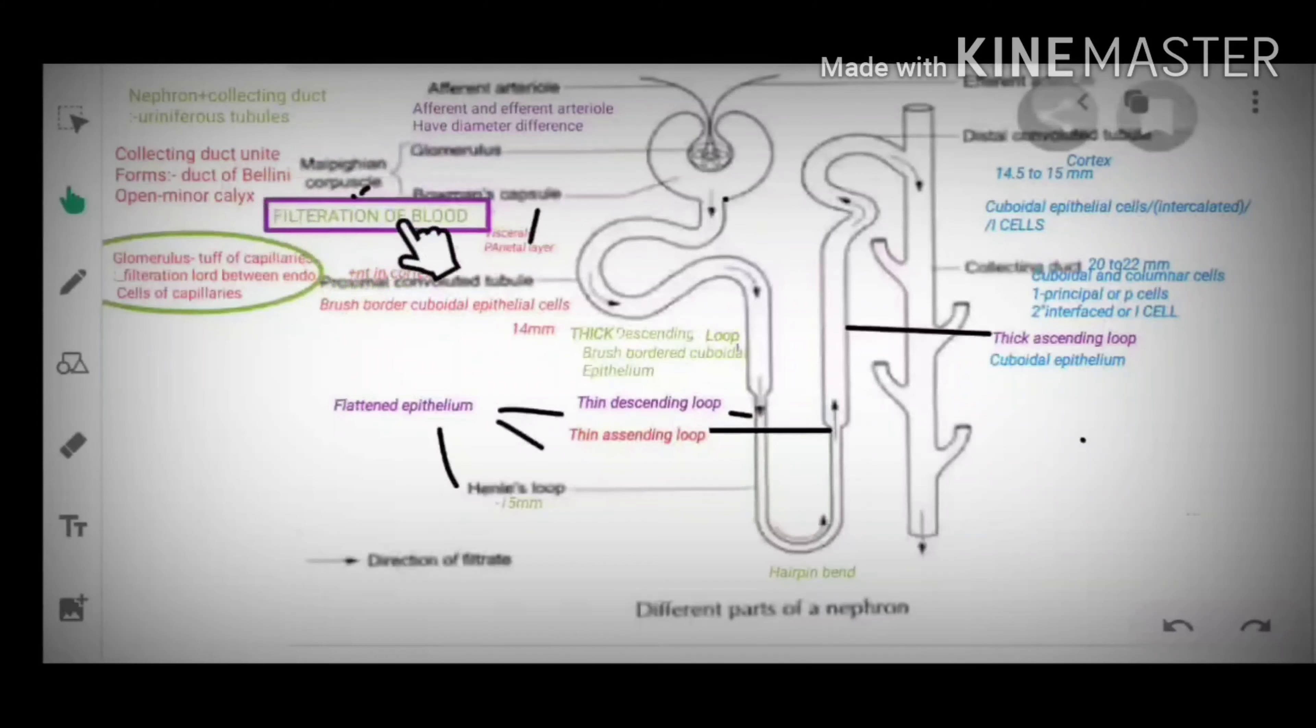One is Malpighian corpuscles, also called as renal corpuscles. And second is tubular portion of nephron.